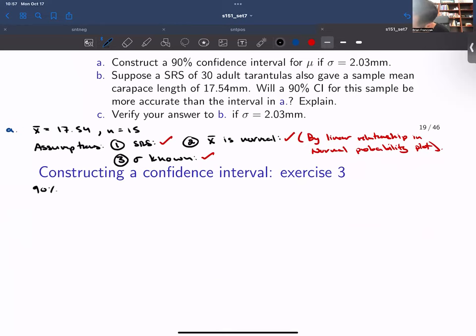We're building a 90% CI here. So we've seen lots of examples of the 90% CI.